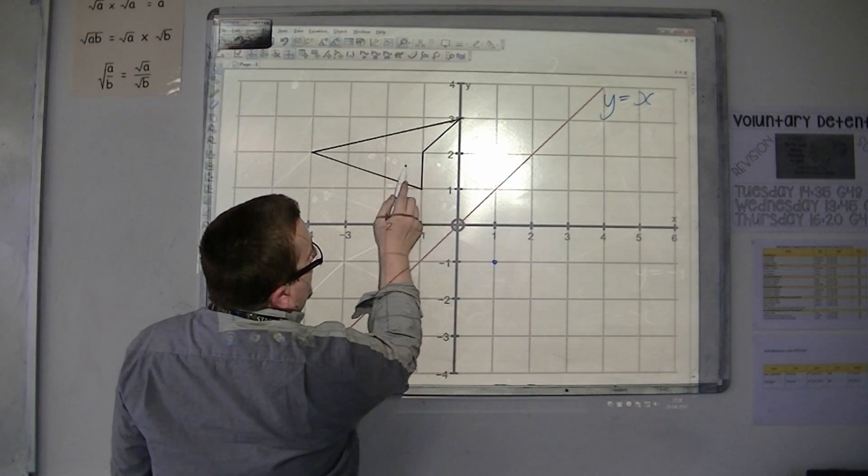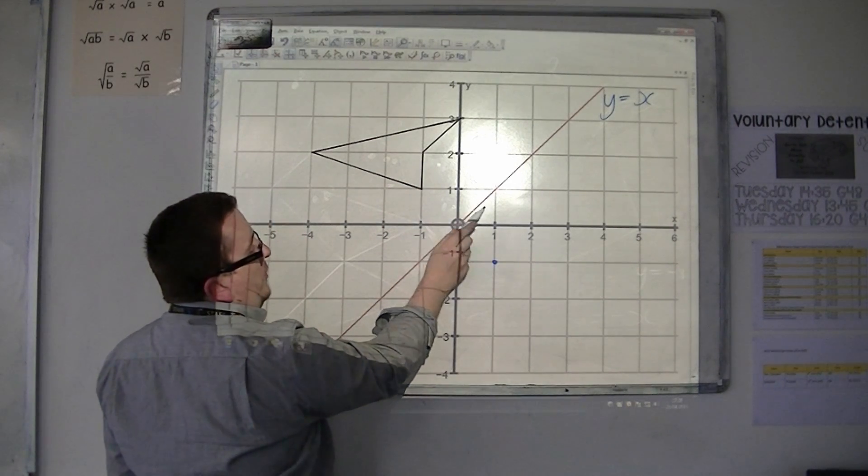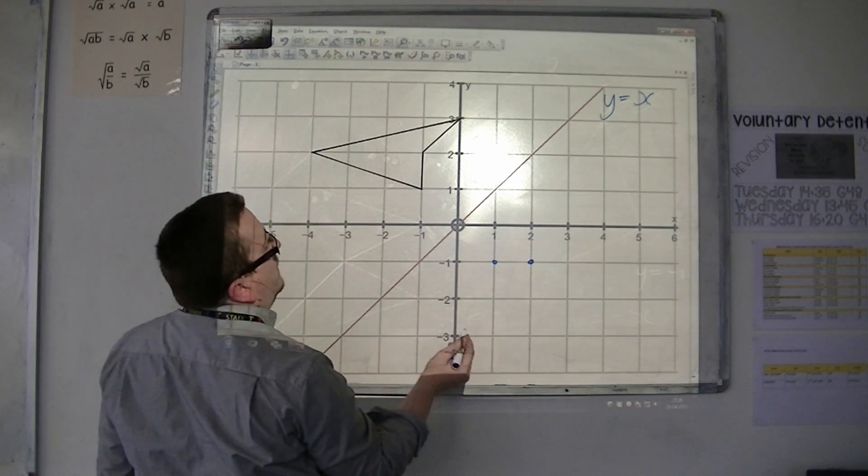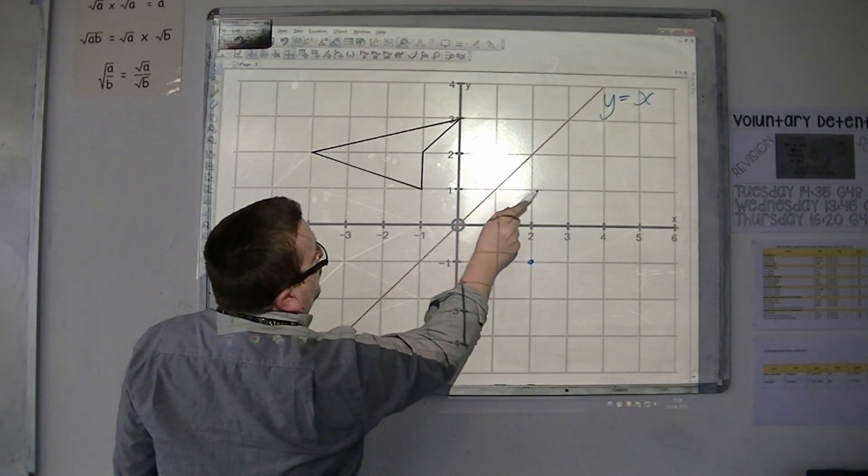This point is one and a half away from the mirror line, so one half and one would put it there. This point is one and a half, so half and one.